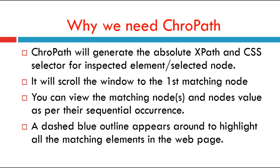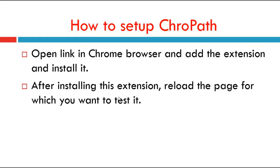A dashed blue outline appears to highlight all matching elements in the web page. In Crowpath, if you mouse over on any matching node, it will give a blue dashed outline which will convert into a dotted orange line to highlight the corresponding element in the web page. If the found element is not in the visible area, when you mouse over on the found element in the Crowpath tab, it will scroll that element into the visible area with a dotted orange outline. That is why we need Crowpath.